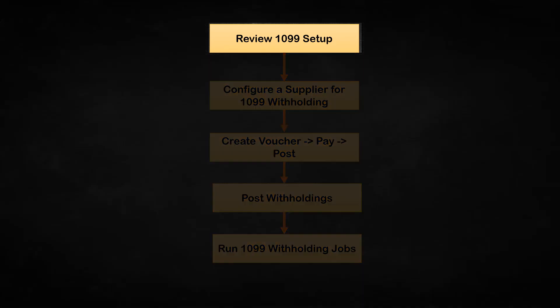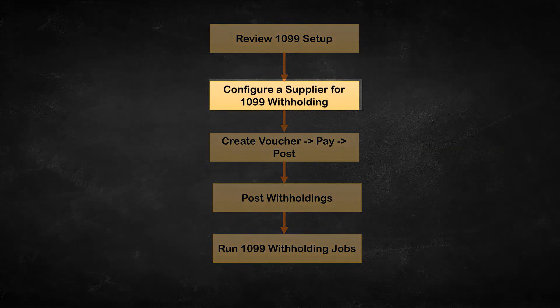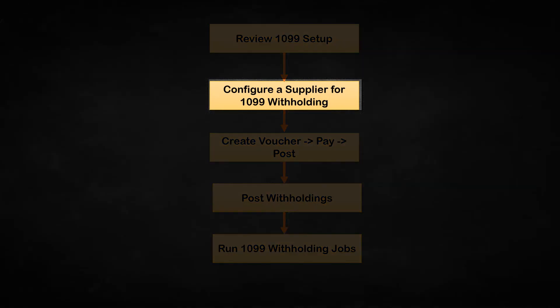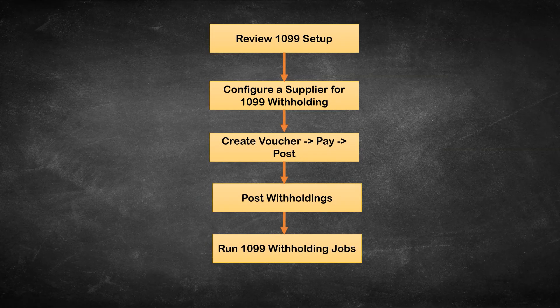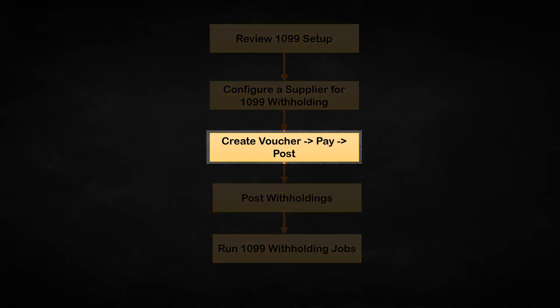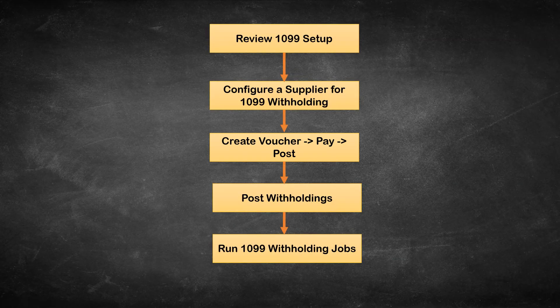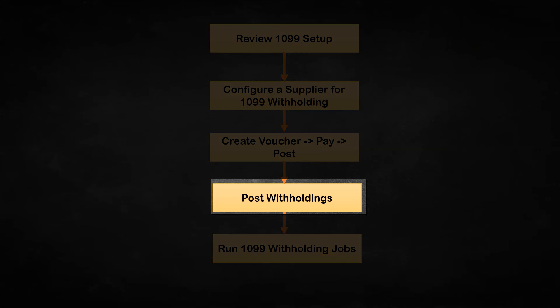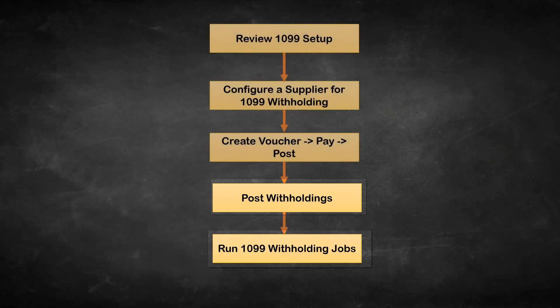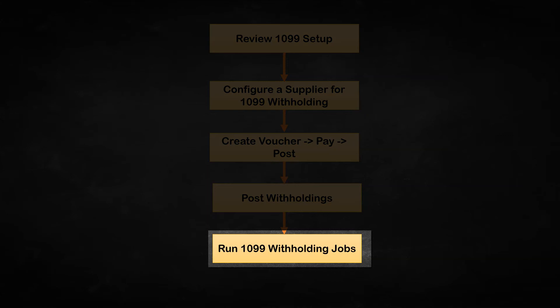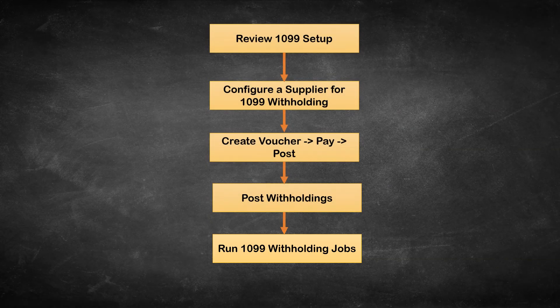I will kick off by showing you the 1099 setup in my PeopleSoft environment. Then we will pick a supplier and mark the supplier for 1099 withholding. We will create a voucher, pay the supplier, and then run the payment posting process. Next we will run the withhold posting process. Finally, we will be running 1099 withholding jobs which generates a 1099 file that can be submitted to IRS as well as 1099 forms that can be dispatched to all suppliers.